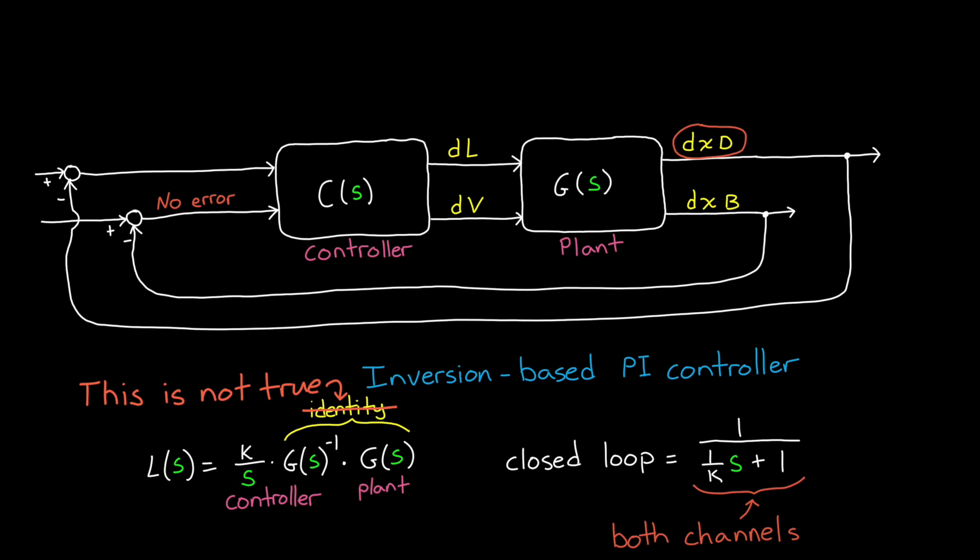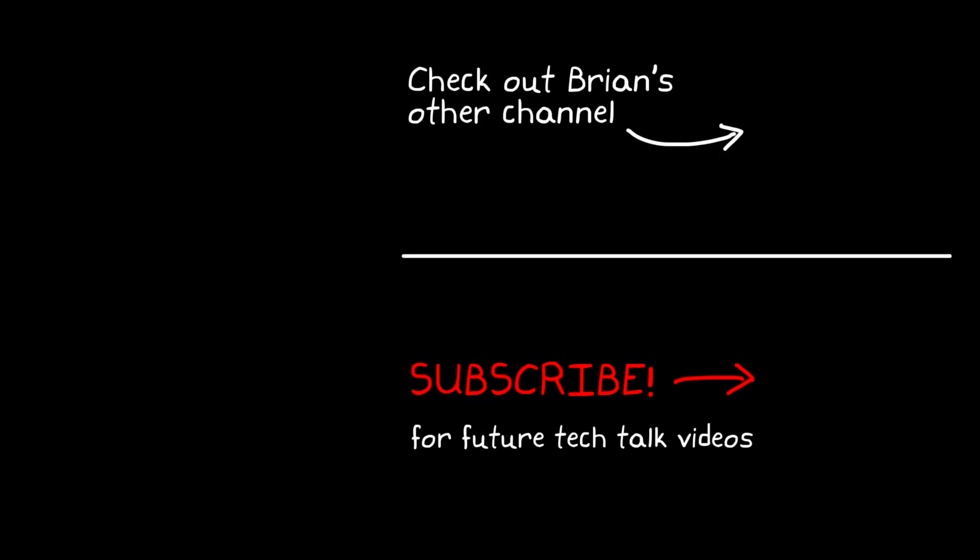Now, in this video we assumed that uncertainty was lumped together at the inputs or at the outputs of the plant. But you might only be uncertain about a particular component in your plant or a particular frequency range. So, in the next video we're going to talk about modeling and quantifying plant uncertainty in a little more detail. And so, if you don't want to miss that or any other future Tech Talk videos, don't forget to subscribe to this channel.